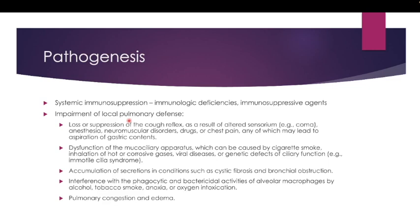We also have impairment of local pulmonary defense, which leads to easier access of organisms into the lung. The first impairment is loss or suppression of the cough reflex, which can result from altered sensorium — for example, comatose patients, patients under anesthesia or on muscle relaxants, patients with neuromuscular disorders, those on immunosuppressive drugs, or chest pain leading to aspiration of gastric contents.